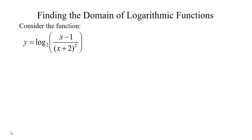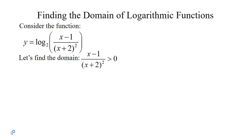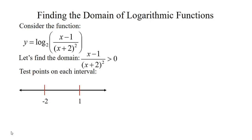Here's another example. We have log base 2 of x minus 1 over x plus 2 squared. To find the domain, we're going to set the ratio greater than 0. When looking at key points for a ratio, you want to include where it's 0 or where it's undefined. In this case, it's 0 at x equals 1 and undefined at x equals negative 2, so we put both numbers on a number line and test points on each interval.